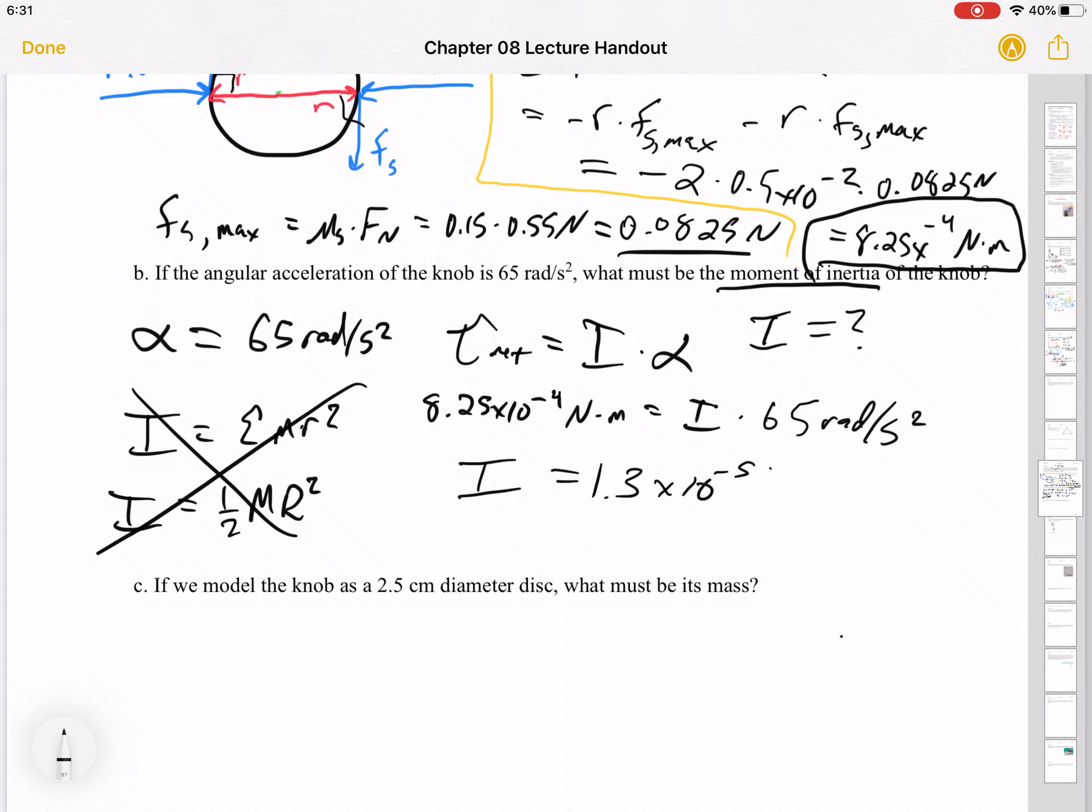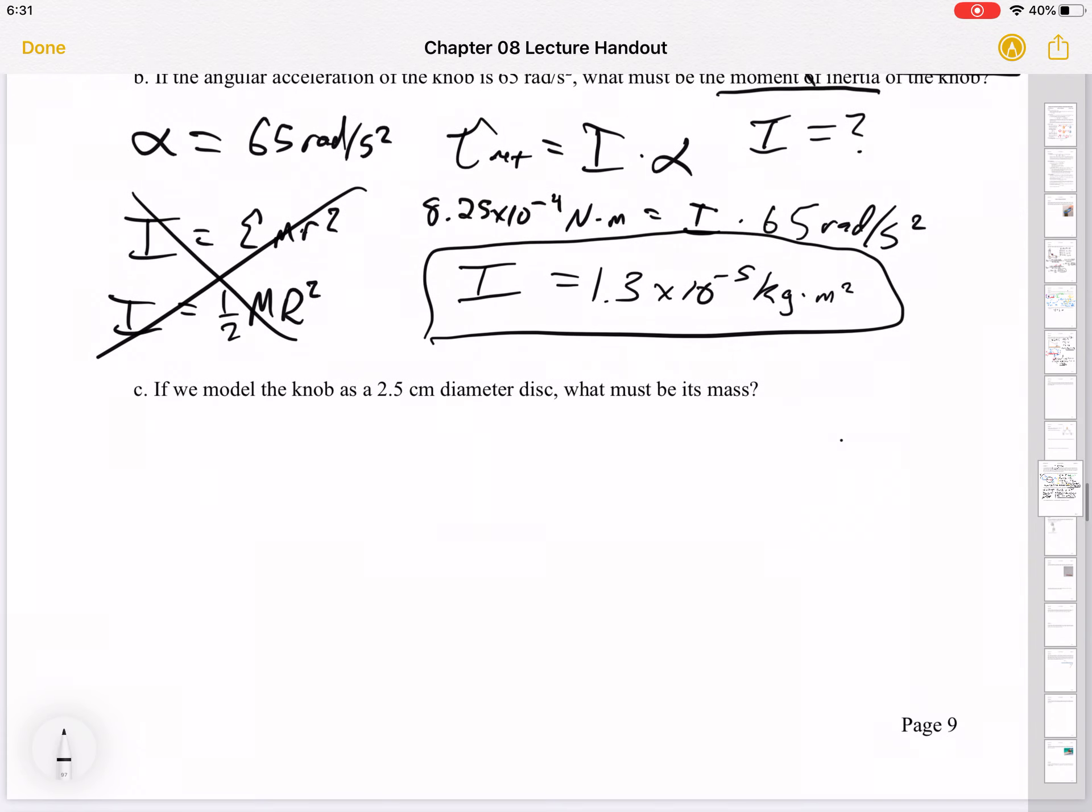Turns out the unit for this is kilogram meter squared. Again, it's not incorrect to say newton meter second squared, but newton is a kilogram meter per second squared. All right, so that should work out. Okay, so the last bit here. If we model the knob as a disk, okay.